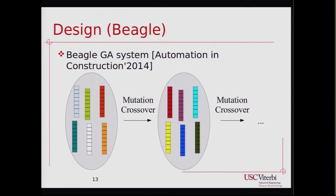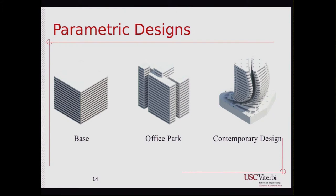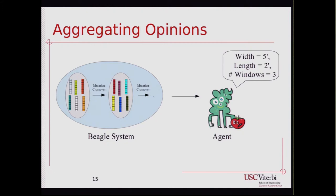Beagle uses a genetic algorithm approach: you have a set of solution vectors as offspring, and a series of mutations and crossovers are performed across iterations, outputting a set of first-ranked solutions. We explore three parametric designs with increasing levels of complexity. We aggregate the opinions of a series of Beagle systems — each run of Beagle is seen as an agent that outputs its opinions about each parameter in the parametric design.